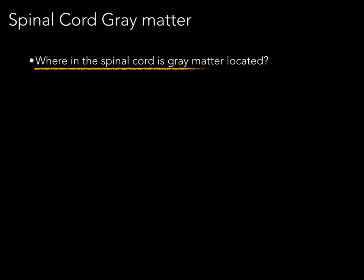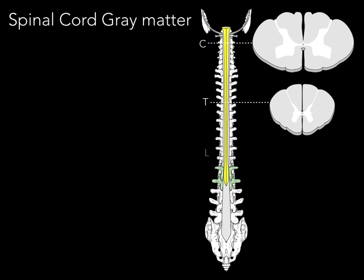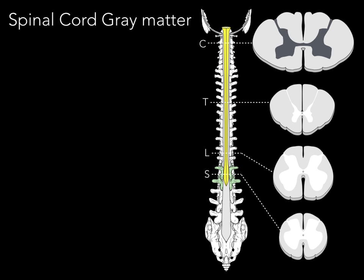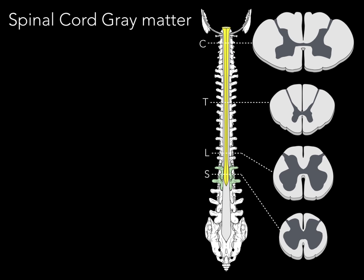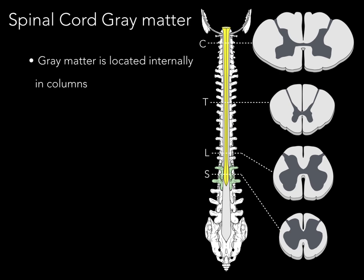Where in the spinal cord is gray matter located? Looking again at a cross-section — cervical, thoracic, lumbar, and sacral regions — the gray matter is internally located, forming a butterfly shape on the inside, and it's surrounded externally and peripherally by white matter. Gray matter is located internally in columns.